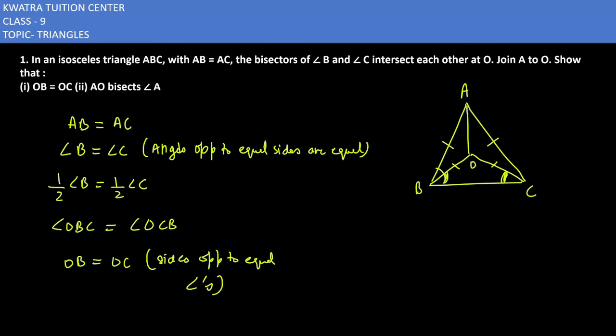Now in second case, we will prove that the AO line bisects angle A, that means divides angle A into two equal halves. How do we do this? I will find two triangles.